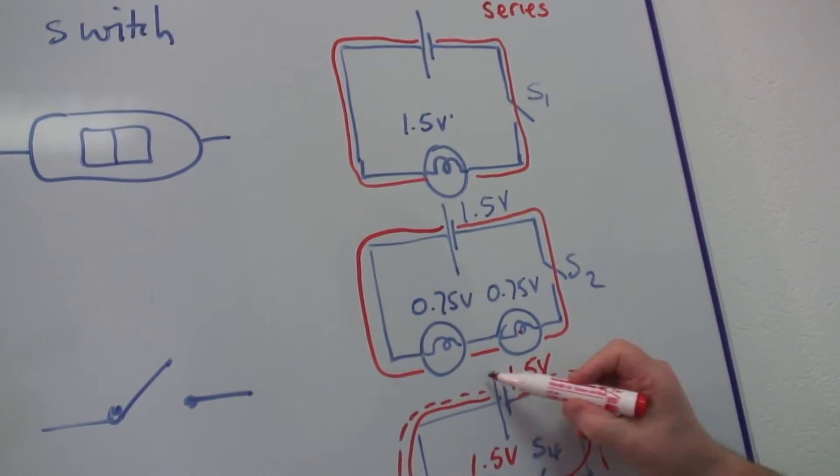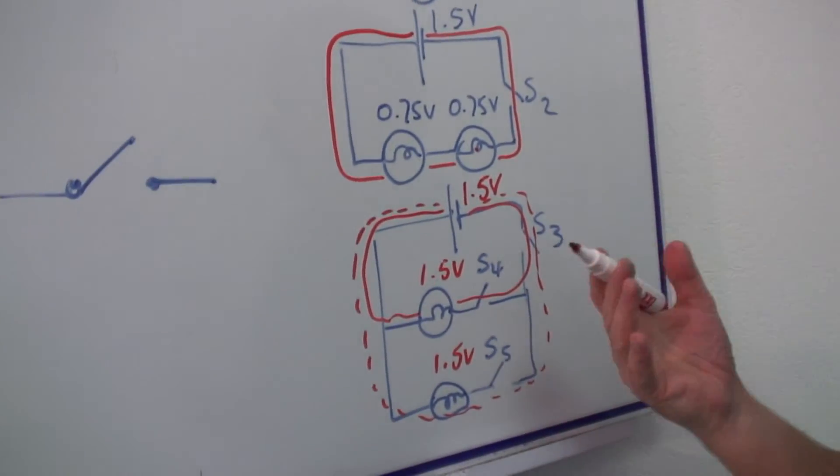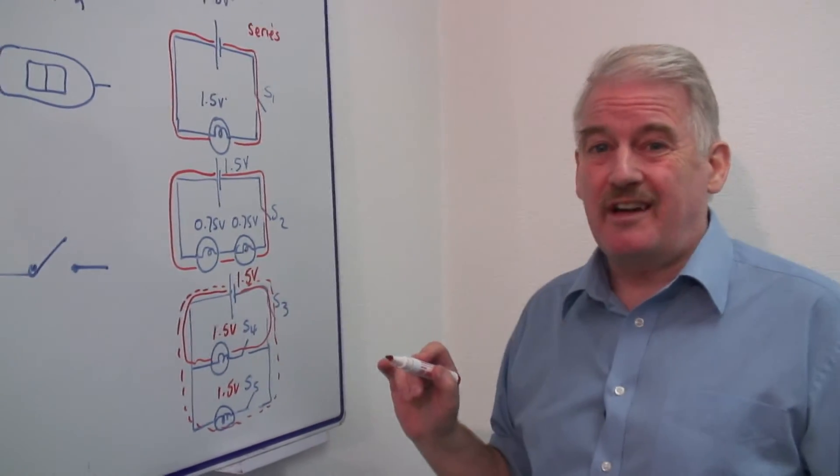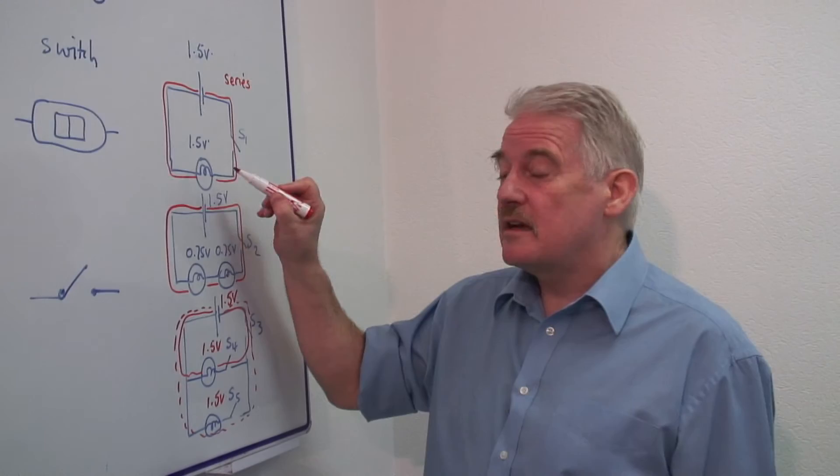Providing, of course, that the cell is not asked to provide too much current. There's a maximum amount of current a cell will provide, and therefore they might not be quite as bright as in this case.